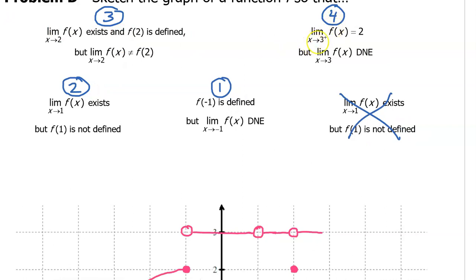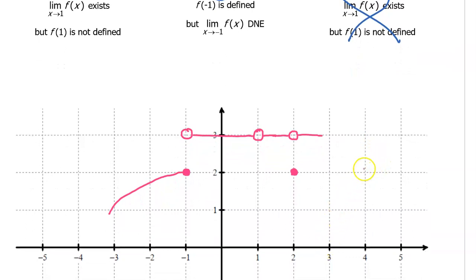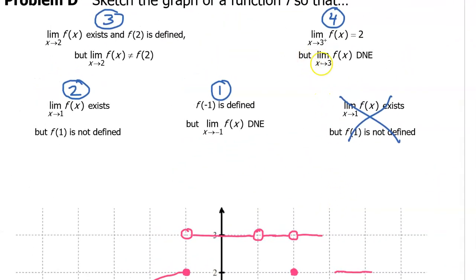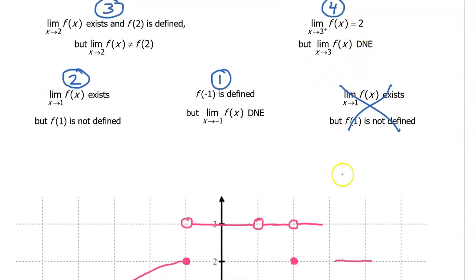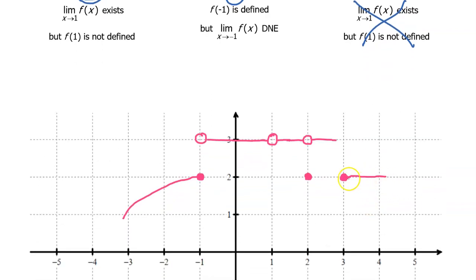The fourth condition says the limit as x approaches 3 from the right equals 2, which is satisfied by what I'm drawing right here. However, the overall limit as x approaches 3 does not exist. It doesn't matter if I put an open or closed circle here. The limit from the right is 2, but because of this jump, the limit from the left is different, so the overall limit at 3 does not exist.